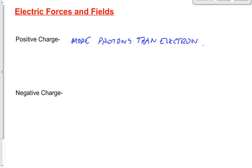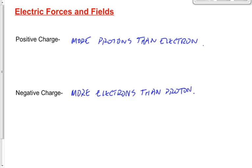Negative charge, similarly, doesn't mean just electrons. Of course you can't have just electrons — the atom is made up of protons, neutrons, and electrons. If you have just electrons, you don't really have matter. Rather, a negative charge means you have more electrons than protons. What would the third category be? Neutral — that means the same number of protons and electrons.